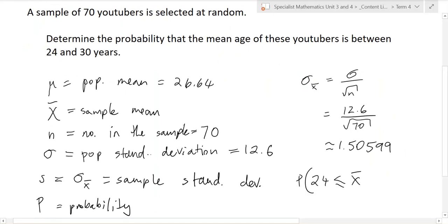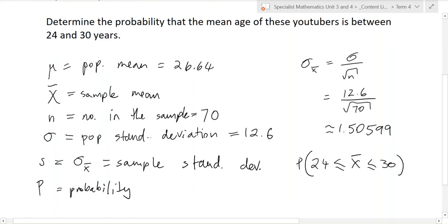So to write this in math language, we're trying to figure out the probability X bar is greater or equal to 24 and less than or equal to 30. So it's within those. So we can now type this into the TI calc.